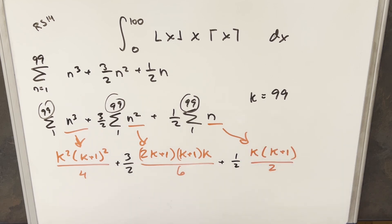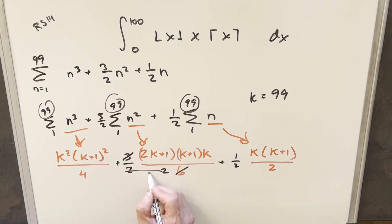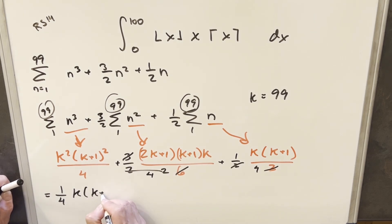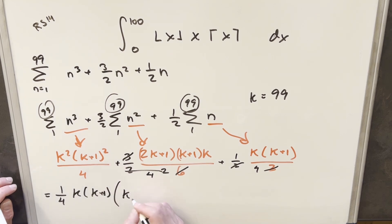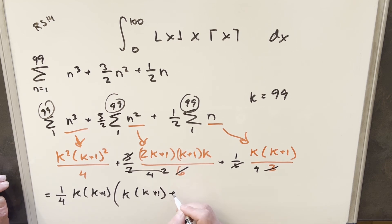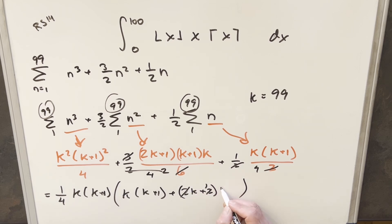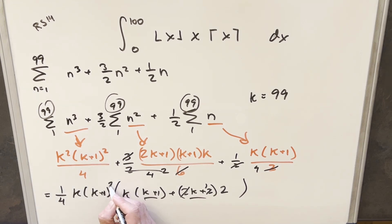I've rewritten this with the standard summation formulas in red for each of the three cases. There's some cancellation: 3 with 6 simplifies to 2, giving a factor of one-half times one-half, so I can put a 4 in the denominator. I can factor one-fourth out of everything, and also factor out k and k plus 1. Doing that, inside the parentheses we have k times k plus 1, plus 2k plus 1, plus 1. Adding the two 1s gives 2, and factoring out 2 gives another k plus 1, so we can write that as k plus 1 squared, leaving k plus 2 inside.